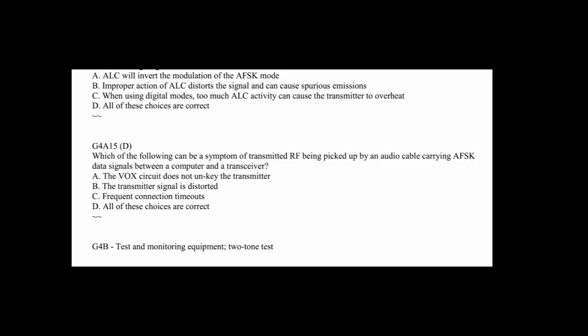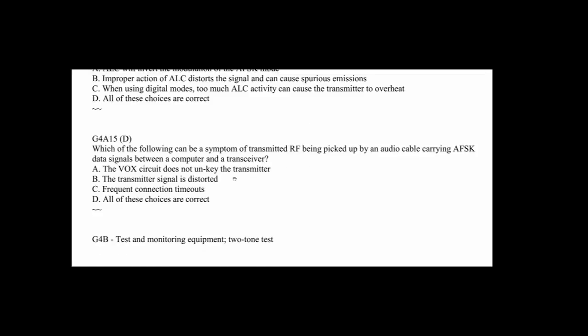Basically what that says is what happens if the mic gain is too high, and the answer is improper action of the ALC distorts the signal and causes spurious emissions. The ALC starts to activate and throttle back the mic gain, and that can cause some distortion. It's always better to set the ALC level at about one-third to one-half scale. G4A15: Which of the following can be a symptom of transmitted RF being picked up by an audio cable carrying AFSK data signals between a computer and a transceiver? The answer is all of them. The VOX circuit does not unkey, it stays keyed because there's RF on the cable, the transmitted signal is distorted, frequent connection timeouts. At least two of these are true, so it's all of the above. That's what happens when RF gets into some of the cables that are used between a computer and transceiver.